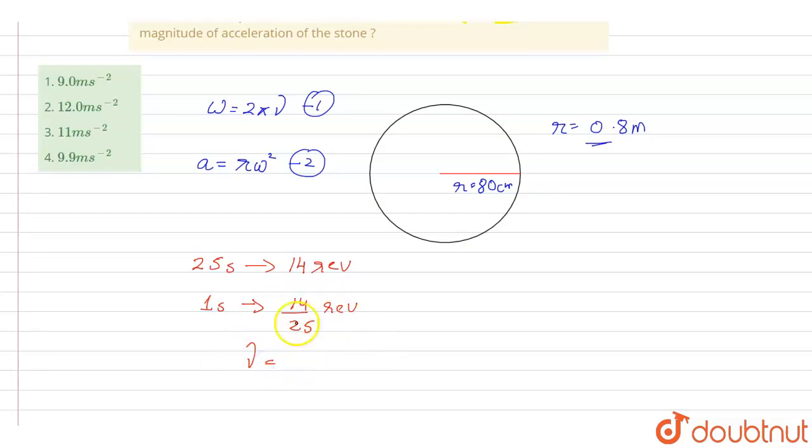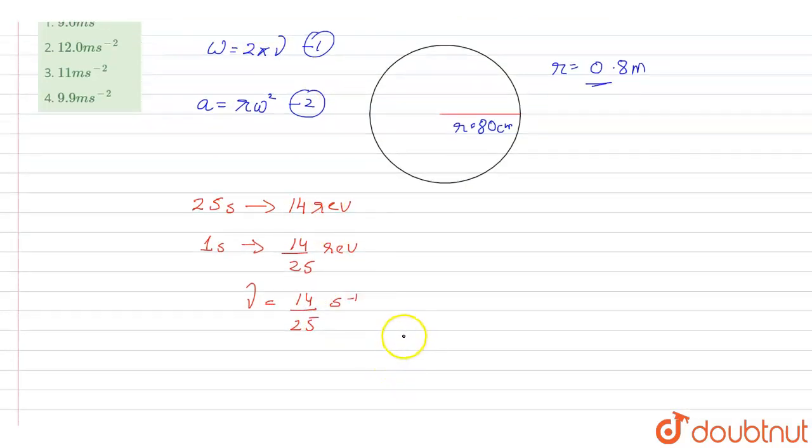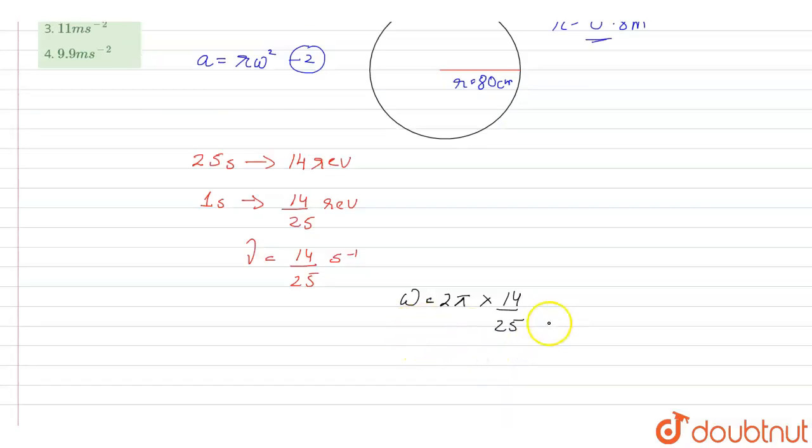Therefore, angular velocity omega will be equal to 2π times nu, which is 14 by 25. So it will be equal to 2 times pi, which is 22 by 7, multiplied by 14 by 25.